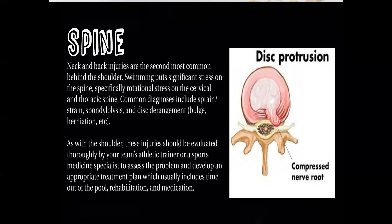Neck and back injuries are the second most common behind shoulder injuries. Swimming puts significant rotational stress on the cervical and thoracic spine. Common diagnoses include sprain, strain, spondylosis, and disc issues such as bulge, herniation, and stenosis. A compressed nerve root due to disc protrusion can cause tingling sensations along the dermatomes through the proximal and distal limbs. These injuries should be evaluated thoroughly by an athletic trainer, sports medicine specialist, or physiotherapist, with treatment typically including time out of the pool, rehabilitation, and medication.